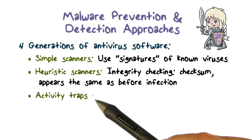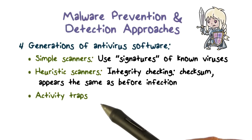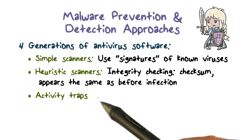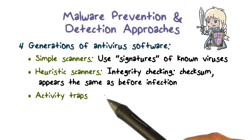The third generation is activity traps. These detectors look for particular kinds of activities that malware would typically perform on a system, such as modifying the Windows registry file, or reading the password file and sending it to the internet.